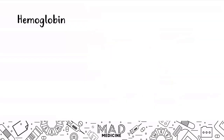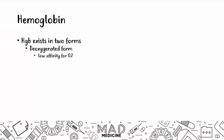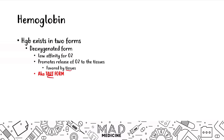Hemoglobin exists in two forms. The deoxygenated form has a low affinity for oxygen and promotes the release of oxygen to the tissues — so this is favored by the tissues. This is also known as the taut form. The way to remember it: our muscles are taught to take oxygen, so the deoxygenated form releases oxygen faster because the muscles want to get that oxygen.